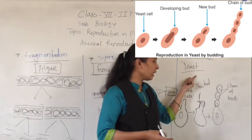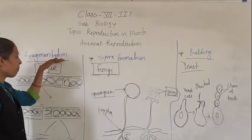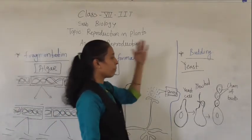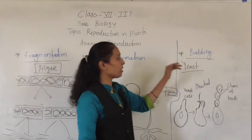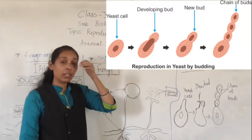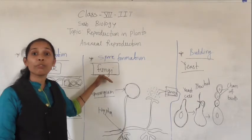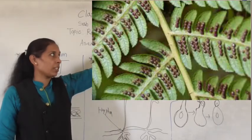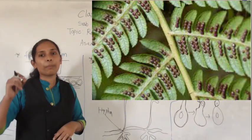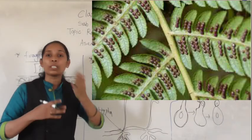So this is budding in the yeast cell. In today's session we have discussed fragmentation which is shown by algae, spore formation which is shown by fungi, and budding which is shown by the yeast cell. In the image you can also see how budding takes place in yeast.